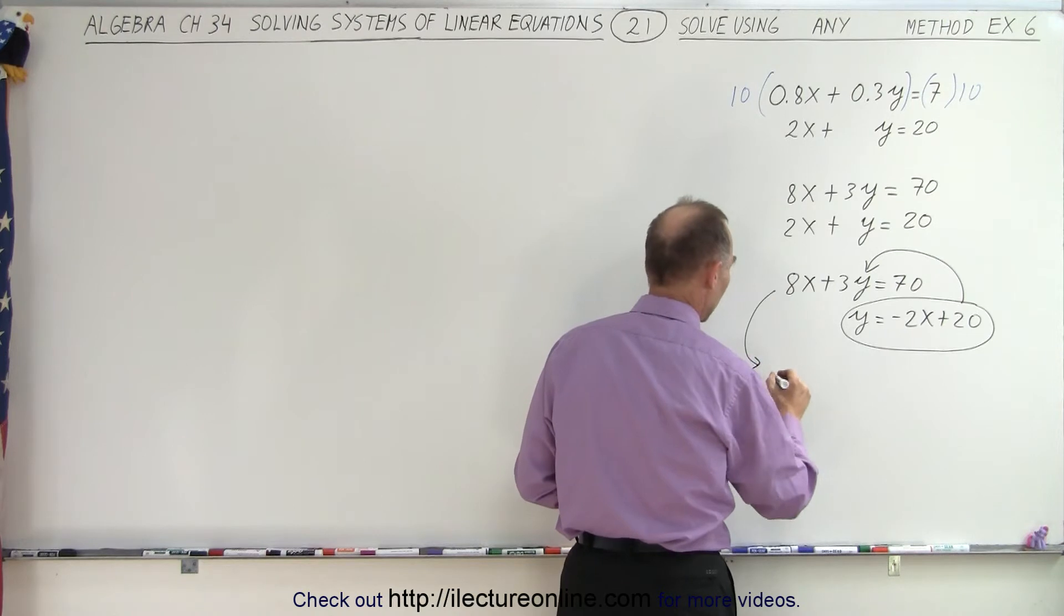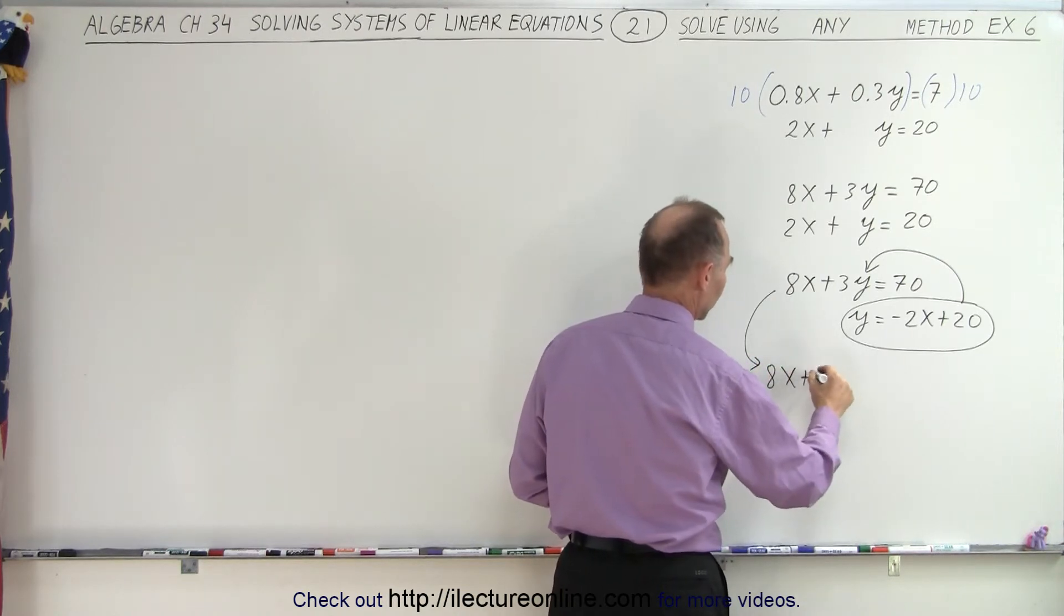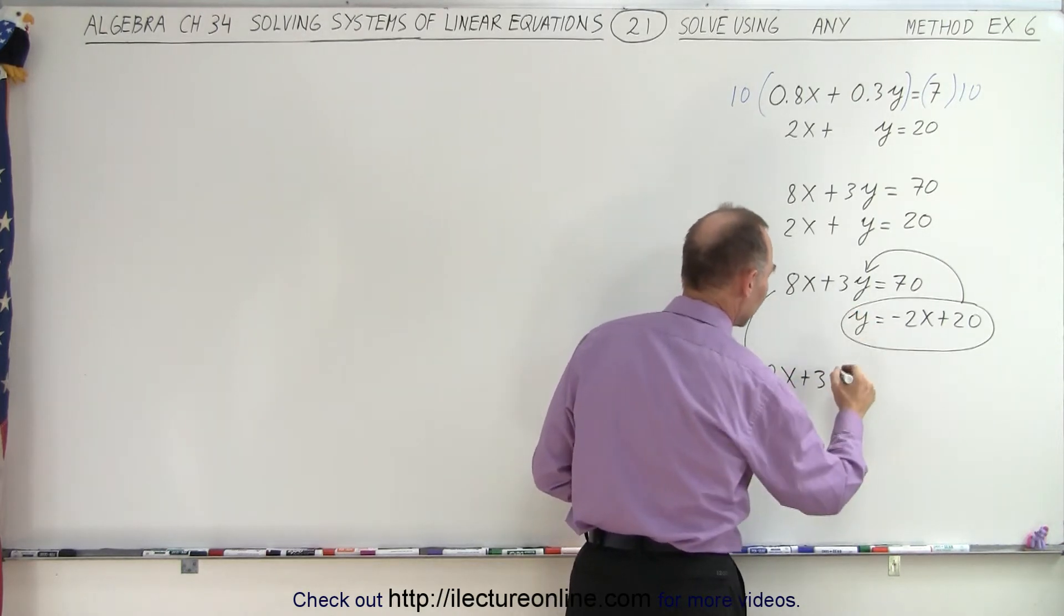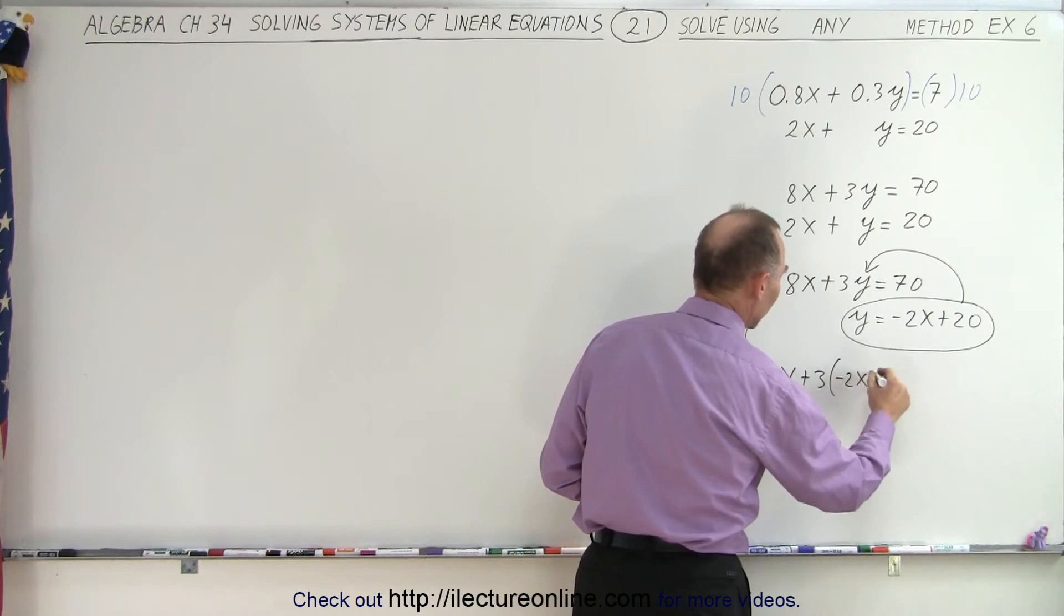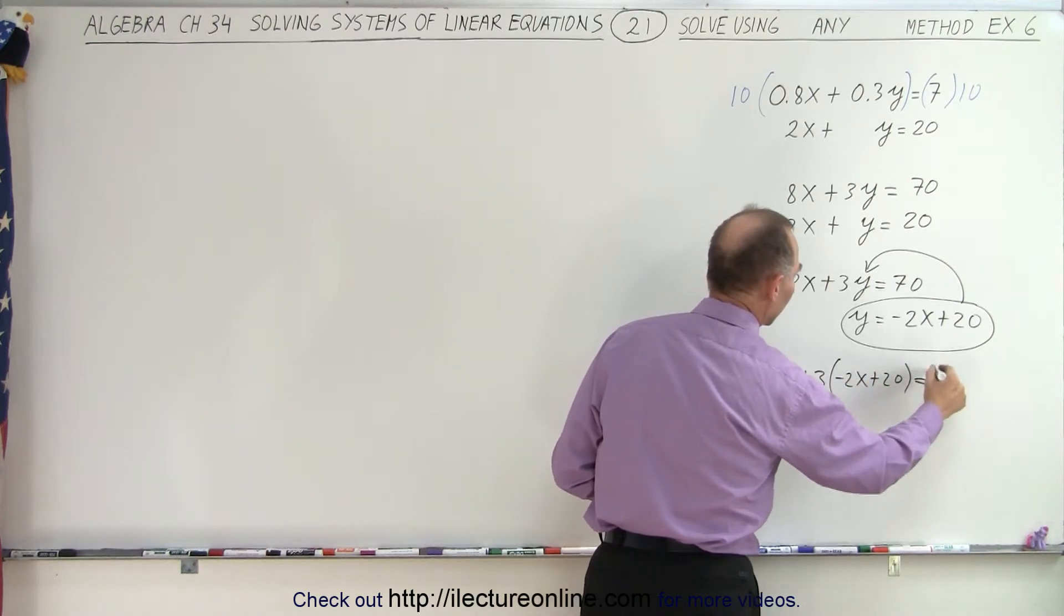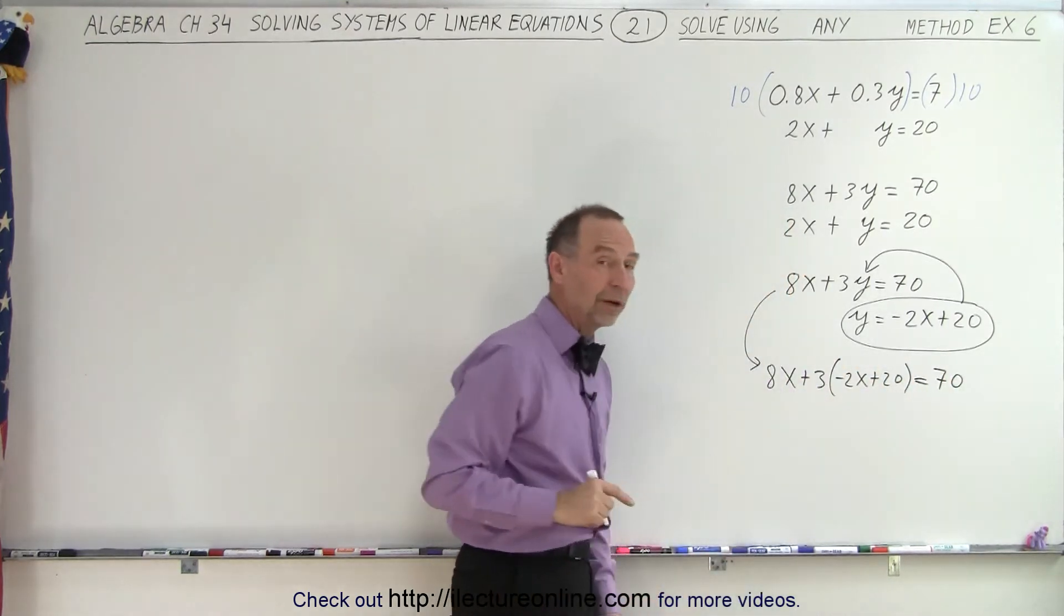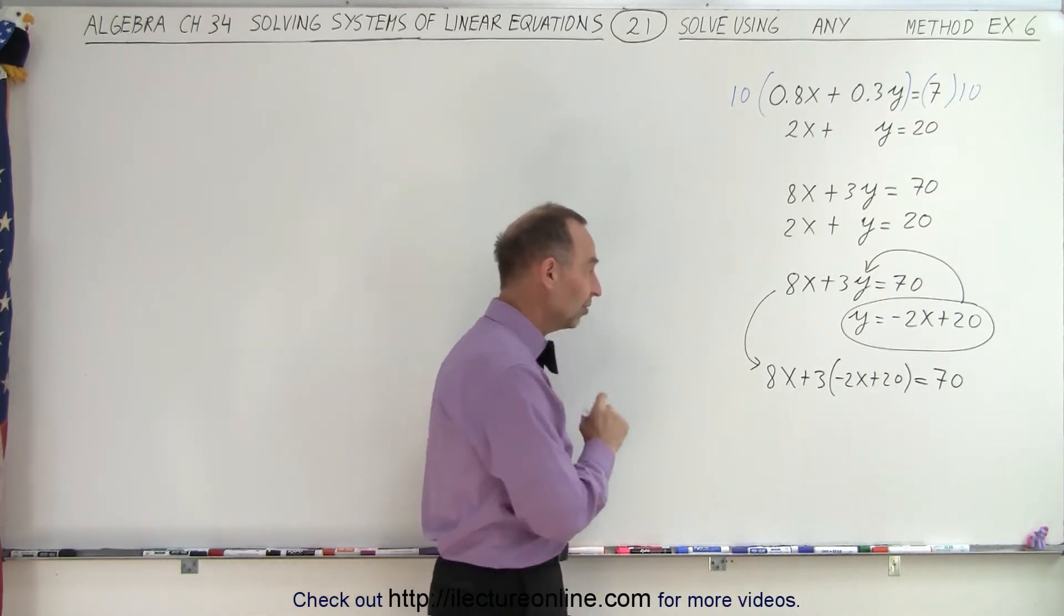So that becomes the following. We get 8x plus 3 times, instead of y, I write what y is equal to, which is 2x plus 20, is equal to 70. And now we have an equation with just one variable, x, that is easy to solve.